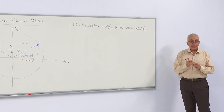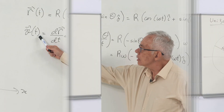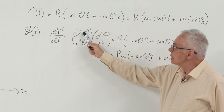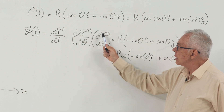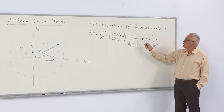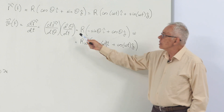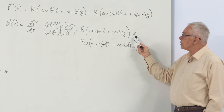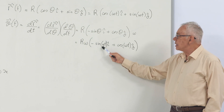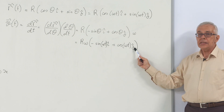From this, we obtain the velocity by taking the derivative. The derivative of position with respect to time is the derivative with respect to theta, multiplied by the derivative of theta with respect to time. The derivative of cosine is minus sine, the derivative of sine is cosine, and the derivative of theta with respect to time gives omega. The result is r omega times (minus sine(ωt) i plus cosine(ωt) j).